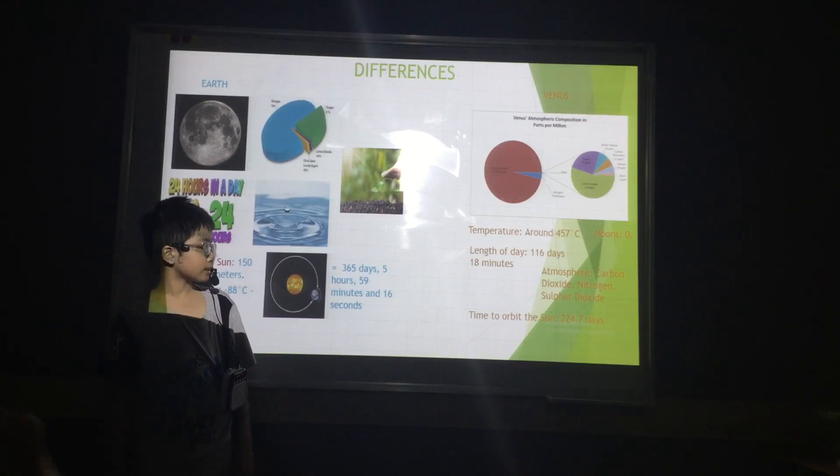The time that it takes Earth to orbit the sun is 365 days, 5 hours, 19 minutes and 16 seconds.